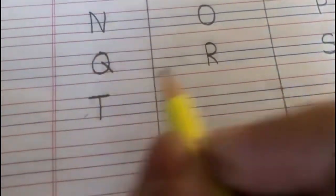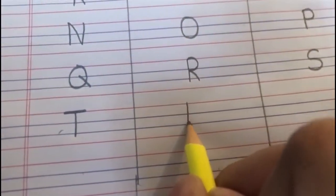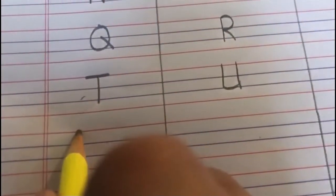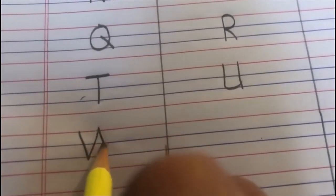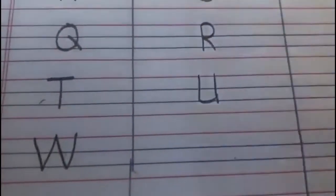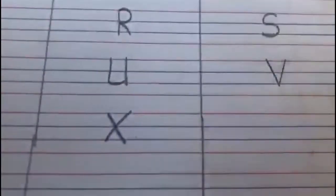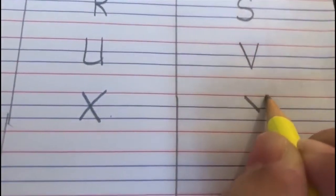T says T. U says U. V says V. W says W. X says X. Y says Y. And Z says Z.